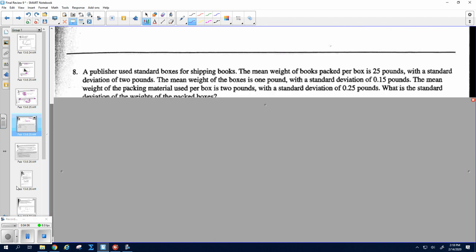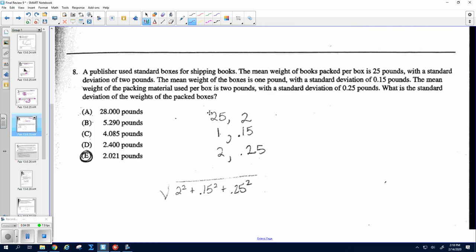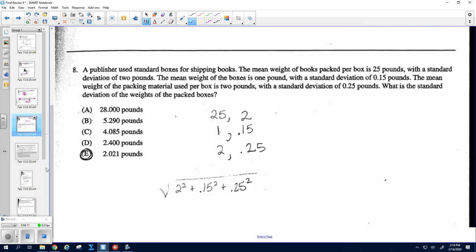Okay, number eight. So you're adding a bunch of separate means, three random variables, and a bunch of separate standard deviations. If you add the means, you would just add them. But remember, with standard deviations, you have to add their variances. So these three numbers are the standard deviations they gave us, and so we add the variances and take the square root. So we do 2 squared plus 0.15 squared plus 0.25 squared, and we square root it, and you should get E.